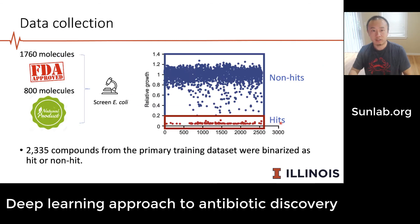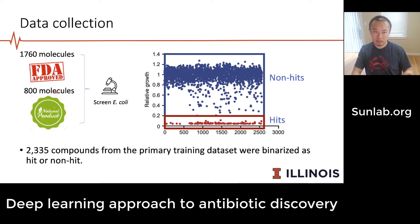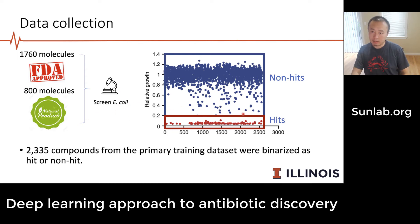In the data collection step, they take 1,760 molecules from a database of FDA-approved drugs — so they're at least known to be safe — and combine that with another 800 molecules from natural products. They use these 2,335 compounds and screen them against E. coli bacteria to see how well those molecules control bacterial growth. The results clearly separate into two groups: the blue ones have little effect on bacterial growth, while the red ones are considered hits and are potential antibiotic candidates.